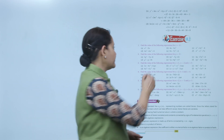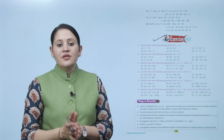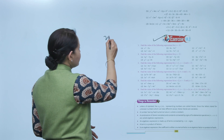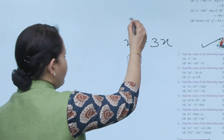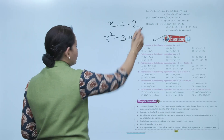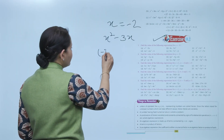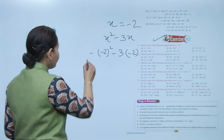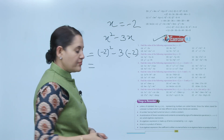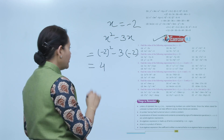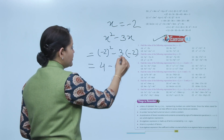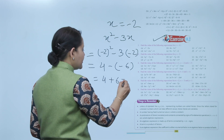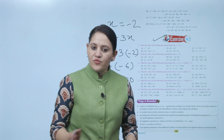Next is Exercise 10.2. Find the value of the expression x² − 3x for x = −2. Substituting: (−2)² − 3 × (−2) = 4 − (−6) = 4 + 6 = 10. This is how we solve. Practice all the questions of this exercise.